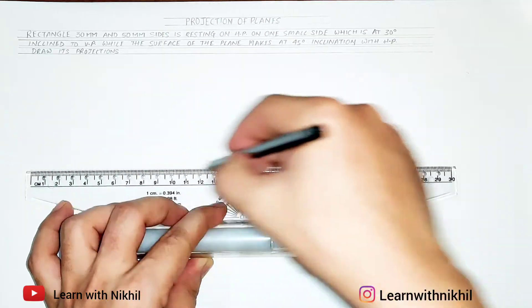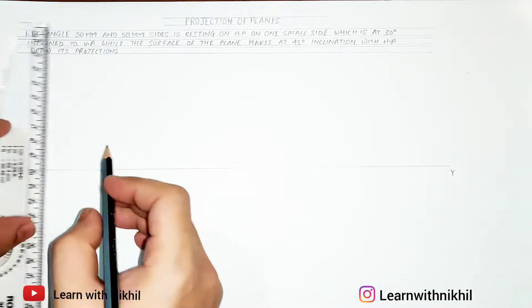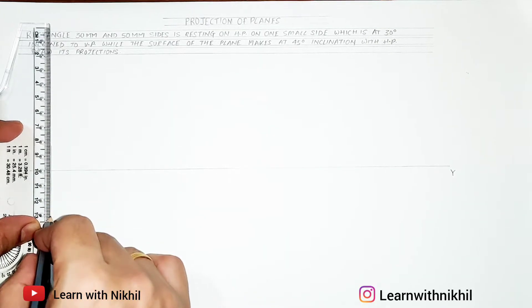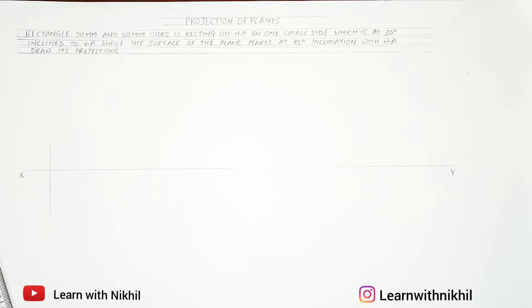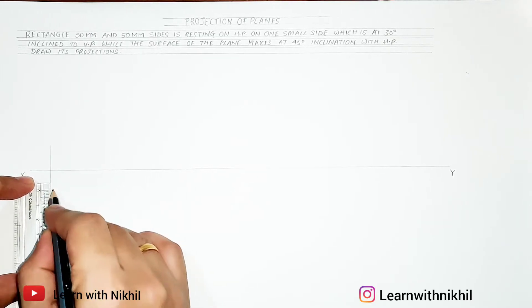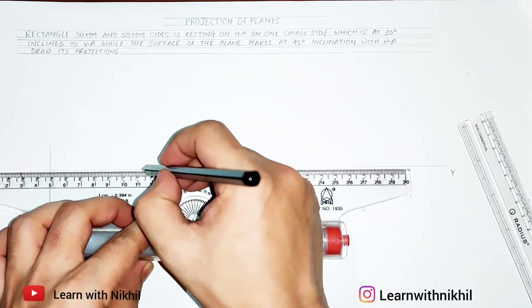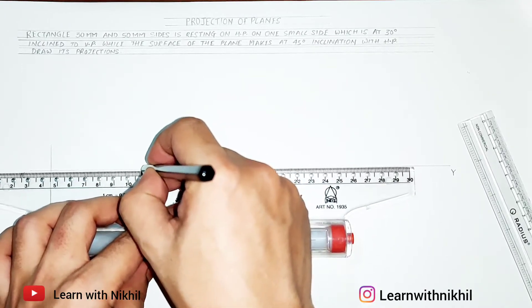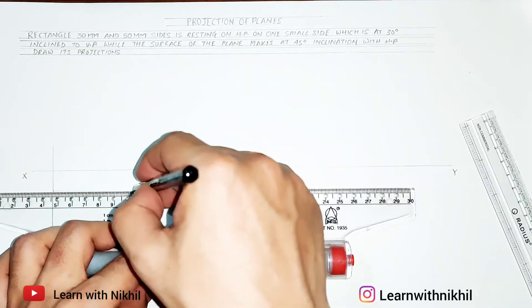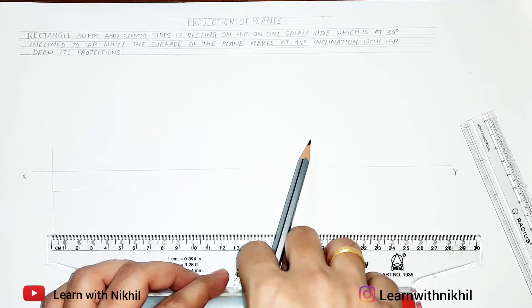This is one of the most simplest sums on projection of planes. First step, we'll draw the horizontal XY axis. Now we'll draw a rectangle with sides 30 mm and 50 mm. As one of its sides is resting on the horizontal plane, first we'll draw the normal rectangle. In the front view it will look like a straight line, and in the top view it will look like a rectangle. This width is 30 mm — that's the smaller side — and the length is 50 mm.